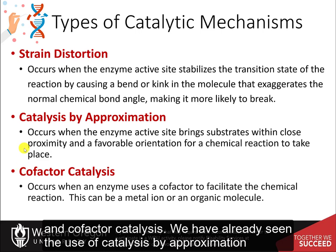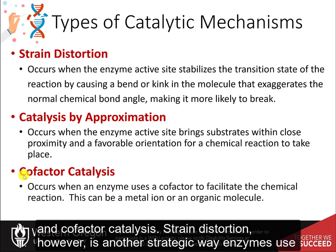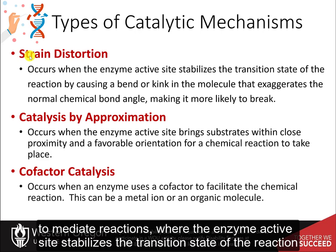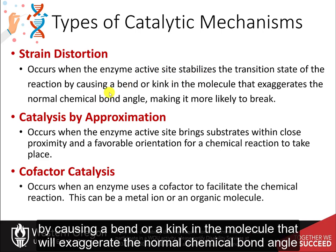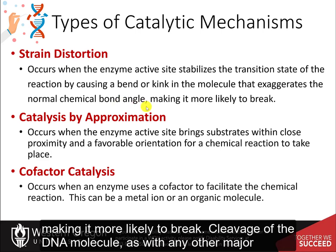We have already seen the use of catalysis by approximation and cofactor catalysis. Strain distortion, however, is another strategic way enzymes use to mediate reactions, where the enzyme active site stabilizes the transition state of the reaction by causing a bend or a kink in the molecule that will exaggerate the normal chemical bond angle, making it more likely to break.